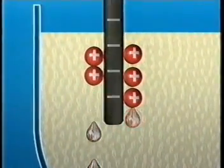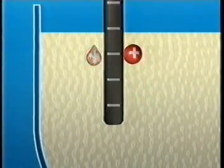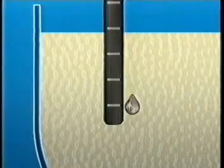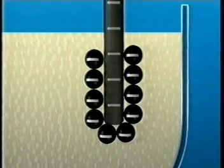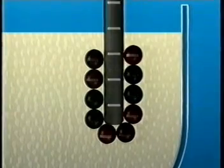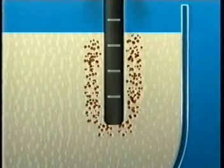Lead ions pick up electrons. They lose their positive charge and form lead atoms. Bromide ions give up electrons. They lose their negative charge and become bromine atoms. These form a gas.